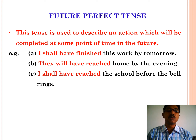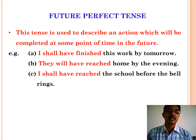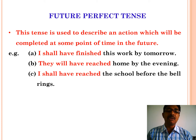Now let us move on to future perfect tense. This tense is used to describe an action which will be completed at some point of time in the future. For example: I shall have finished this work by tomorrow. They will have reached home by evening. I shall have reached the school before the bell rings.